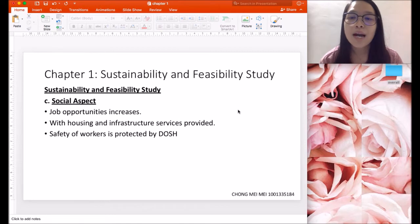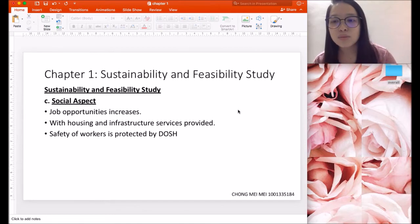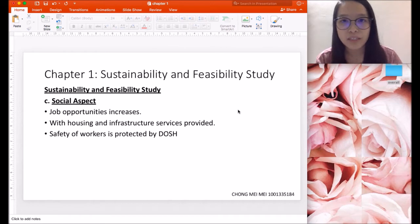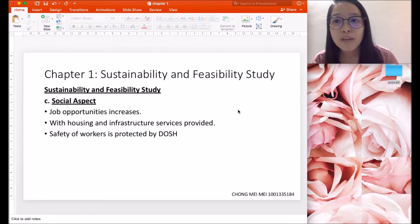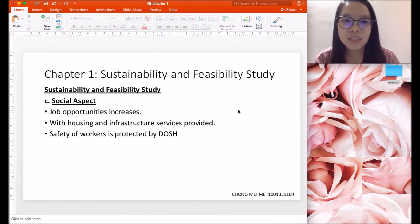When it comes to high manufacturing to cover demand, more job opportunities can be provided to locals and foreigners. Taking Top Glove Malaysia as an example, they provide accommodation for workers for ease of transportation. Workers' housing and infrastructure services are provided. Because Malaysia has DOSH, Department of Safety and Health, the safety of workers is protected.